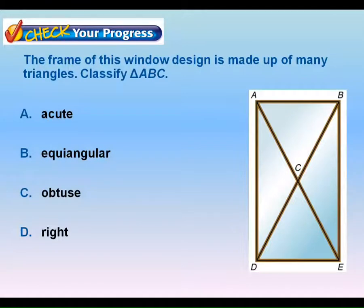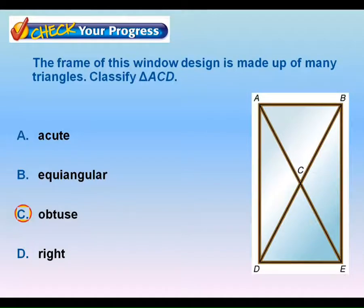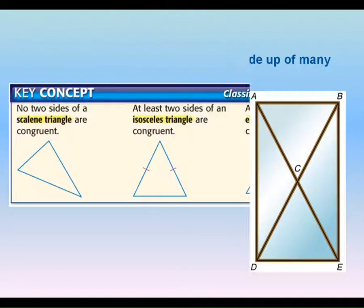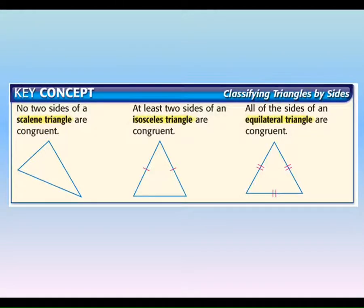So we can classify these angles. Triangle ABC would be acute, ACD would be obtuse, and ADE would be right. The next ones you had were scalene, isosceles, and equilateral. Scalene means none of the sides are the same length. Isosceles means two of them are the same. And equilateral means all three are the same.